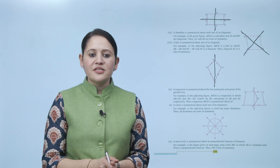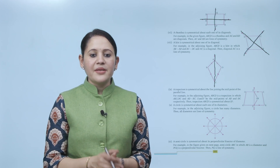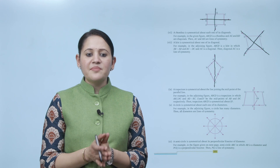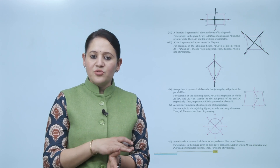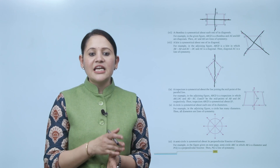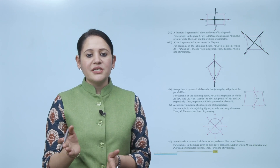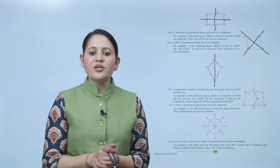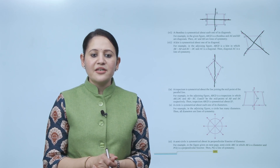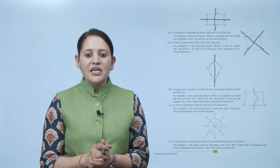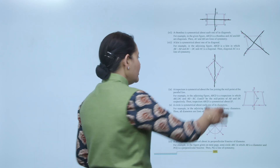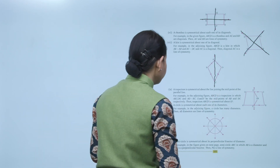A trapezium is symmetrical about the line joining the midpoints of the parallel lines. For example, in the adjoining figure, ABCD is a trapezium in which AB is parallel to DC and AD equals BC. E and F are the midpoints of AB and DC respectively. Then trapezium ABCD is symmetrical about EF.